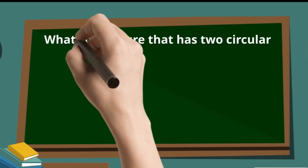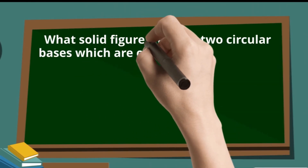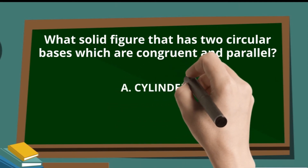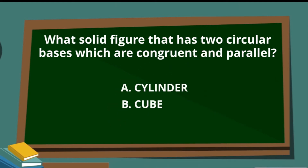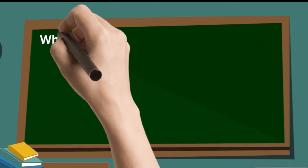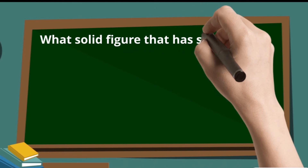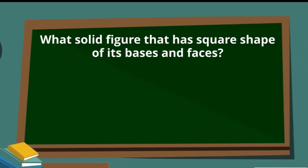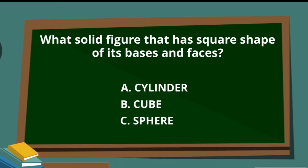Question 3: What solid figure has two circular bases which are congruent and parallel? A. Cylinder, B. Cube, or C. Sphere. Question 4: What solid figure has a square shape of its bases and faces? A. Cylinder, B. Cube, or C. Sphere.